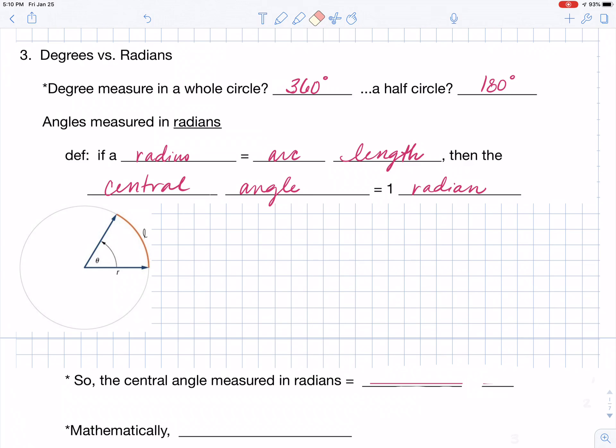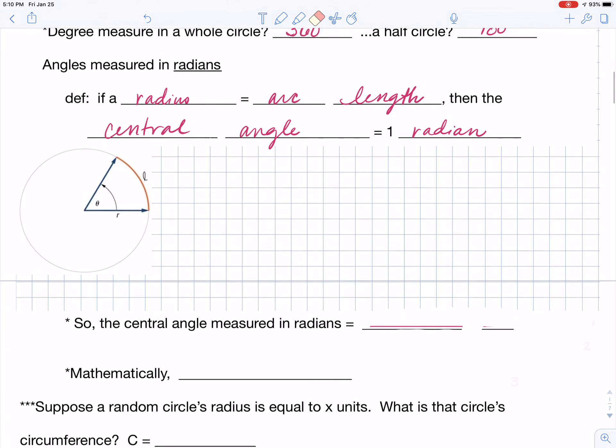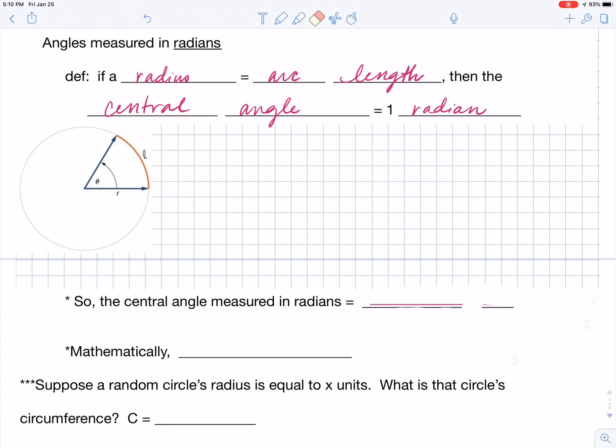If this occurs, then the central angle theta is going to equal one radian. So that's where a radian originates. So one way that we could write that is a central angle that's measured in radians is always going to equal whatever my arc length is divided by whatever my radius is. And mathematically we would say that our angle, which is called theta, is going to equal arc length, which is called l, divided by the radius, which we know is r.